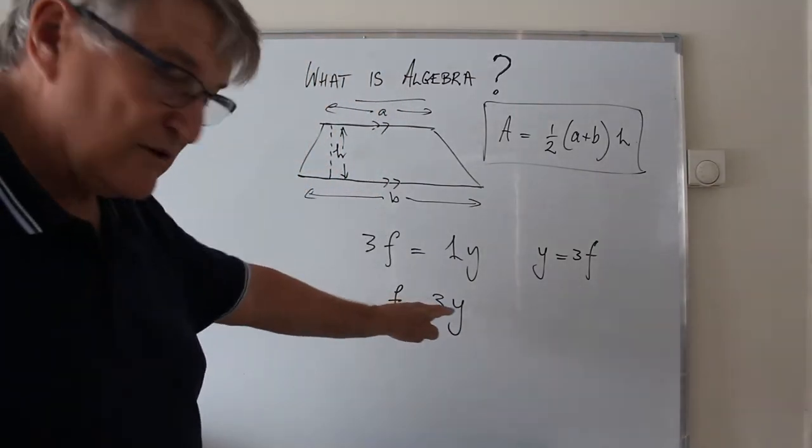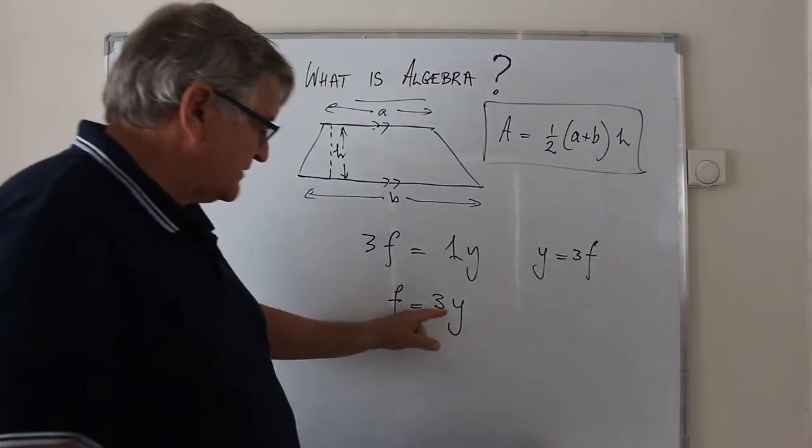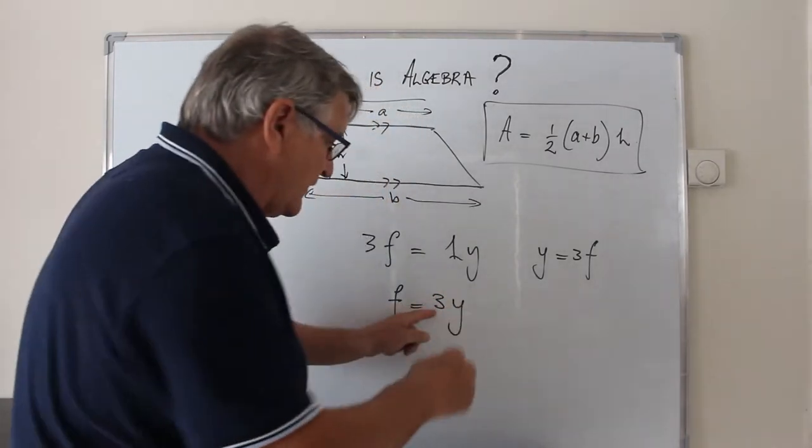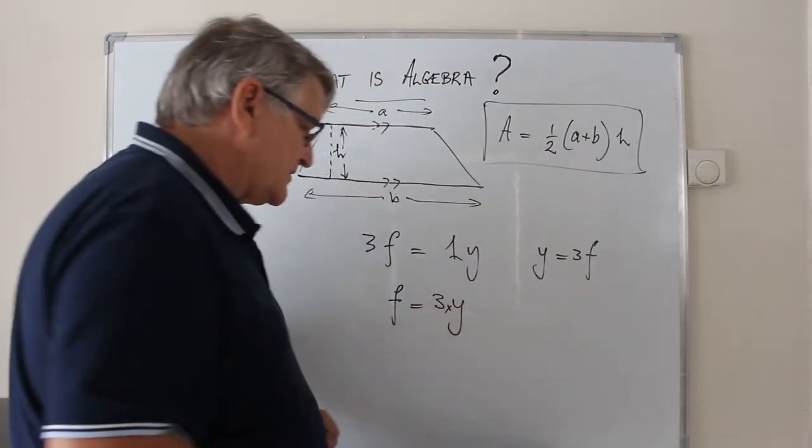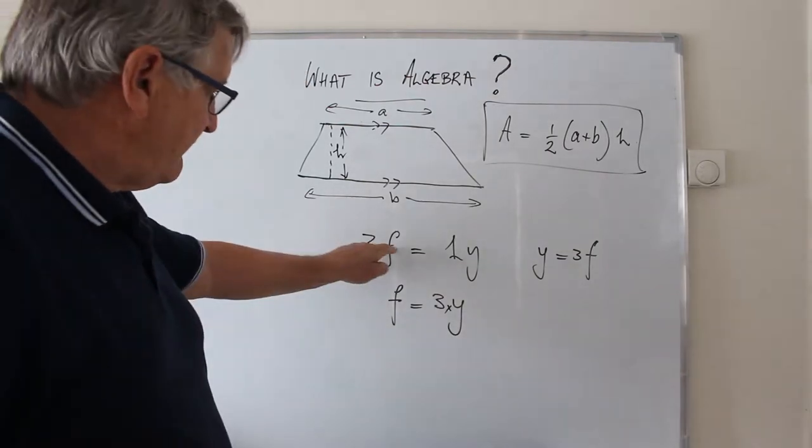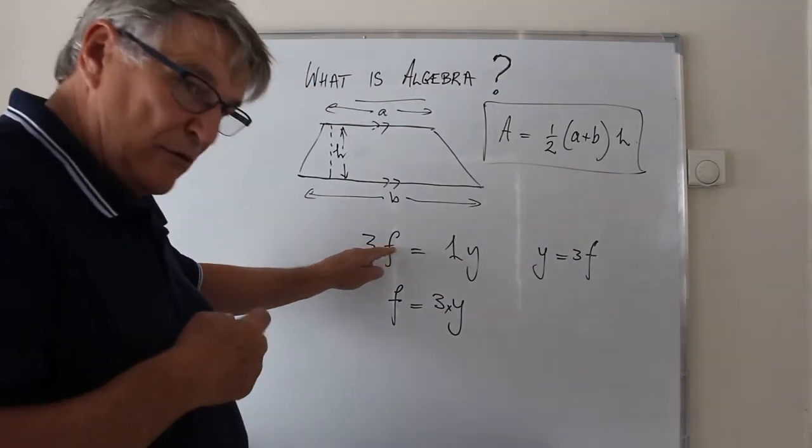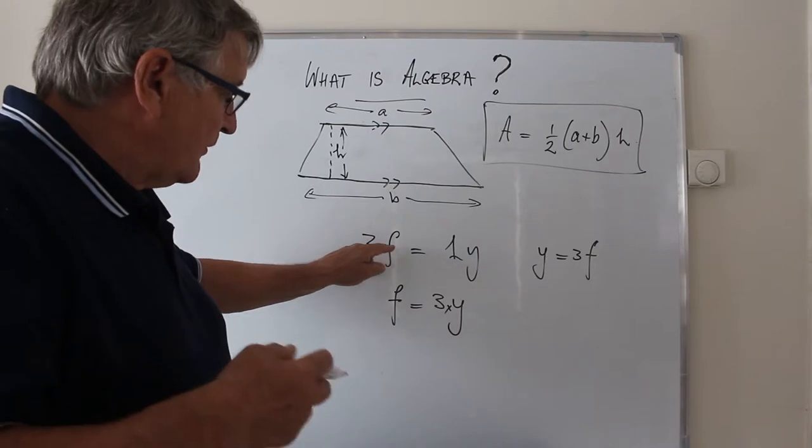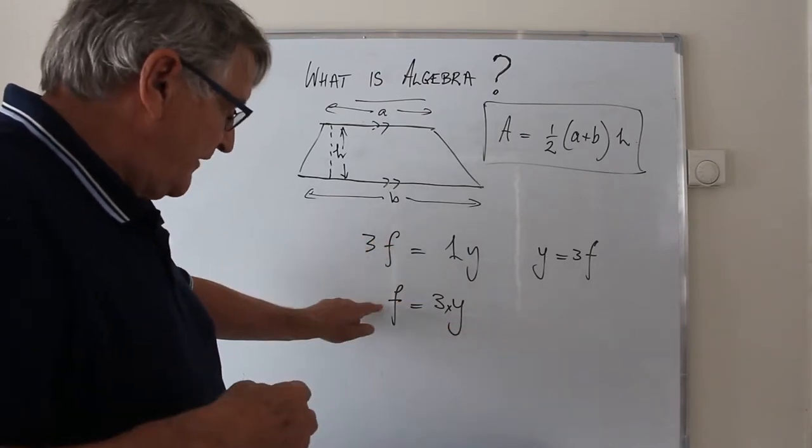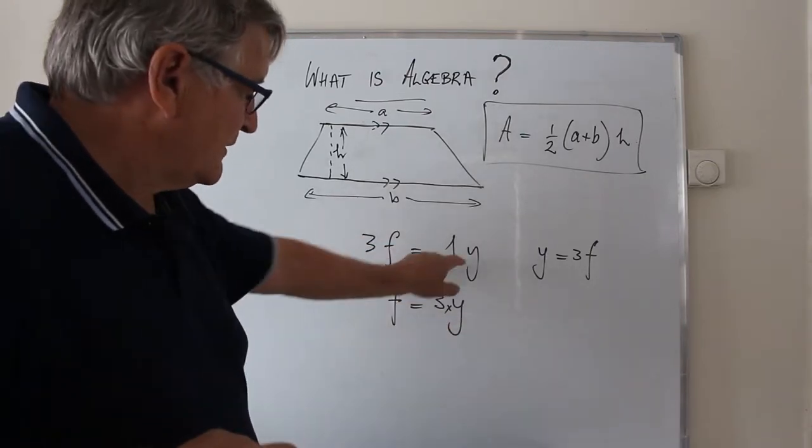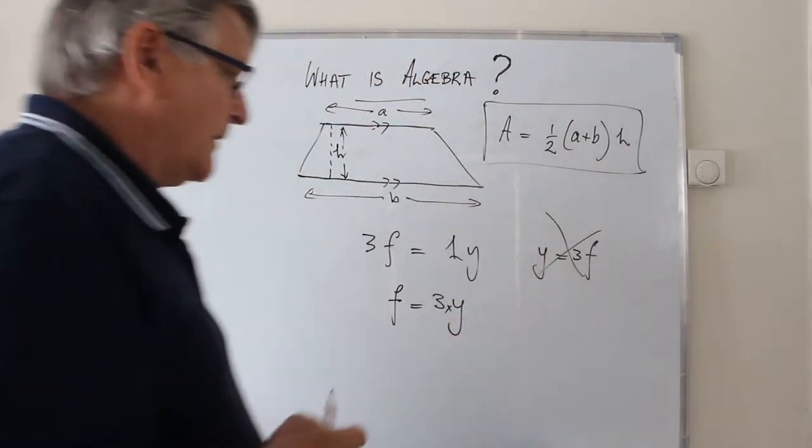And the interesting thing in Algebra too, we're always looking for shortcuts. If we put a 3 and a y together, we don't have to put the multiplication sign in. So f for feet, which is a label, not representing a number of feet, using it as a label will give us the wrong formula.